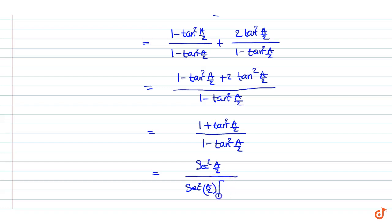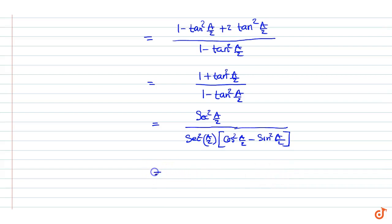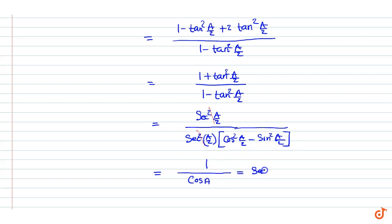1 plus tan²(A/2), into cos²(A/2), into cos²(A/2) minus sin²(A/2). Since 1 + tan²(A/2) into cos²(A/2) equals cos A, this is equal to sec A. This is equal to 1 divided by cos²(A/2) minus sin²(A/2), which is cos A, so this equals sec A.